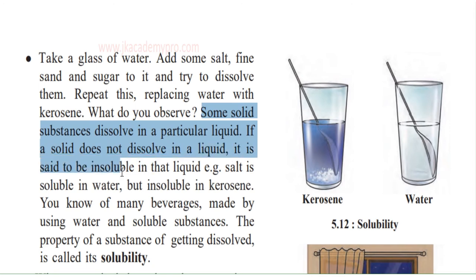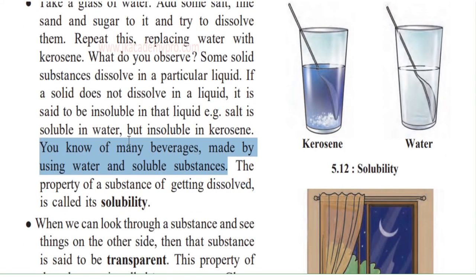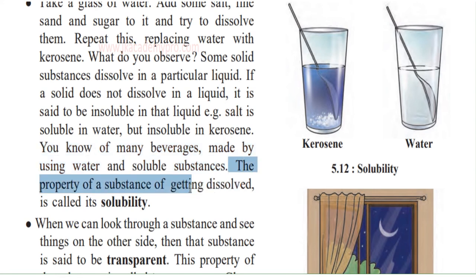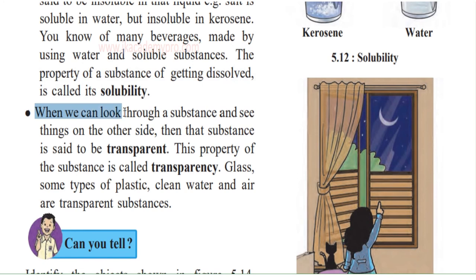You will observe that some solid substances dissolve in a particular liquid. If a solid does not dissolve in a liquid, it is said to be insoluble in that liquid. For example, salt is soluble in water but insoluble in kerosene. We make many cold drinks and hot drinks like tea and coffee using water and soluble substances. The property of a substance to get dissolved is called solubility.